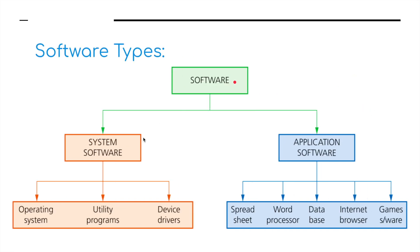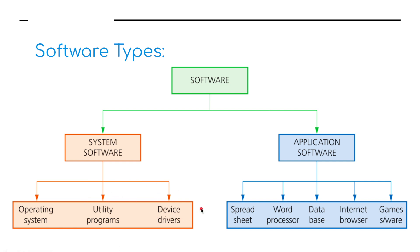Software can be split into two categories: system software and application software. The system software would be the operating system, which encompasses utility programs and device drivers. Application software, which needs to be installed on top of an operating system, would include things like spreadsheets, word processors, databases, internet browsers, and game software.